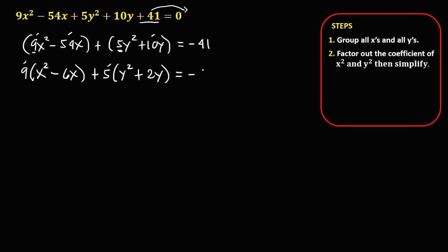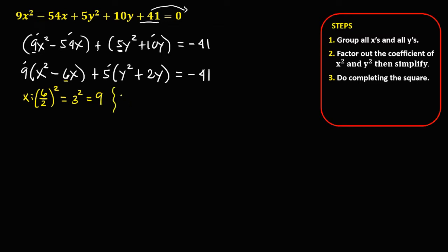This equals negative 41. Now do completing the square. For x, take the coefficient of x, which is 6, divide by 2 to get 3, then raise to the power of 2: 3 squared equals 9. For y, take the coefficient 2, divide by 2 to get 1, and 1 squared equals 1.